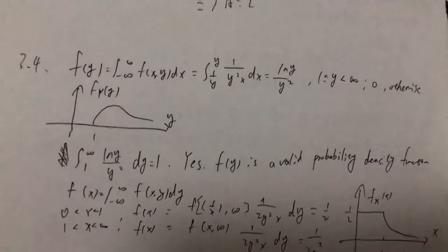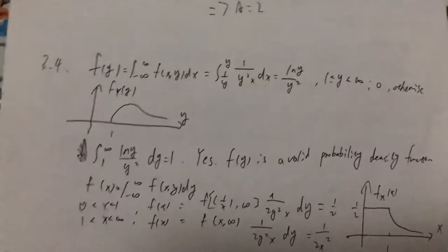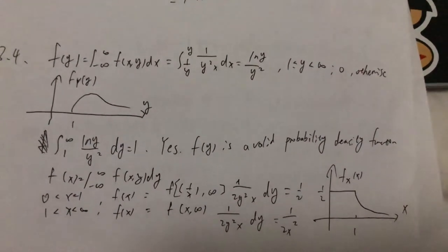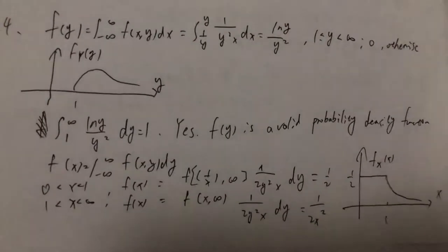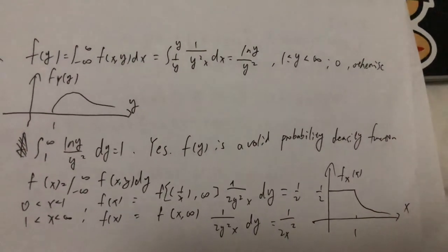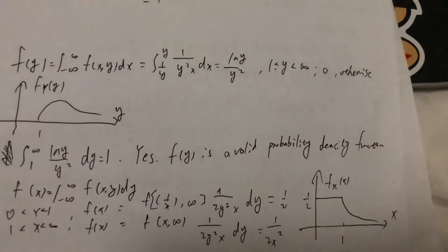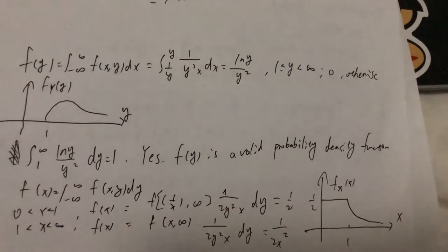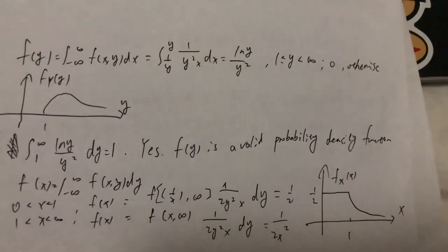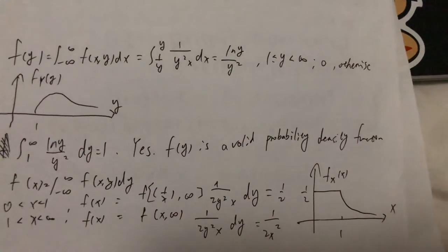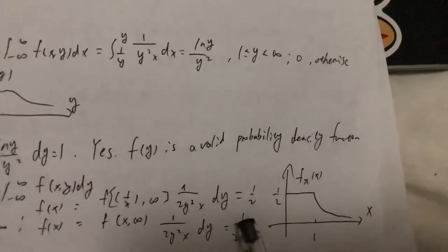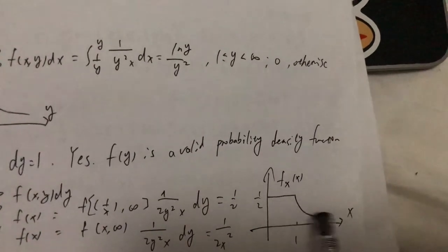We verify that the integral of 1 over y squared dy equals 1, confirming fy is valid. Then for fx, we integrate f(x,y) dy over two periods: for x smaller than y and bigger than 0, integrating 1 over 2 y squared x dy gives 1 over 2; and for x smaller than infinity and bigger than 1, integrating 1 over 2 y squared x dy gives 1 over 2x squared. Combining these two periods gives us the final function and graph. Thank you.